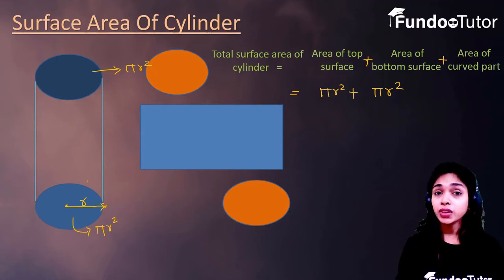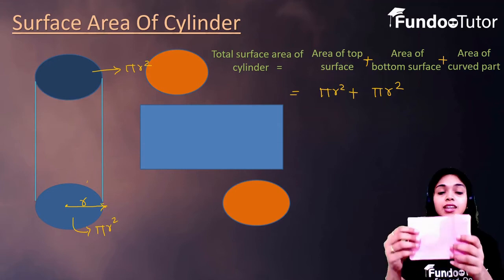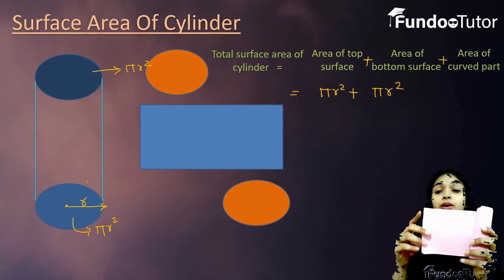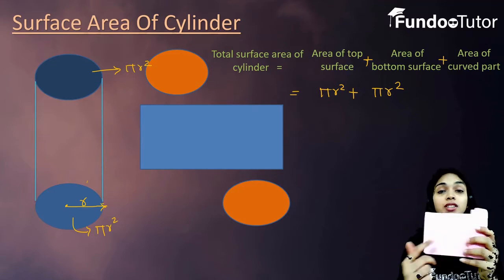If you look carefully this figure, you will notice the length of this rectangle is actually the circumference of this cylinder. And breadth is nothing but it's a height of this cylinder.